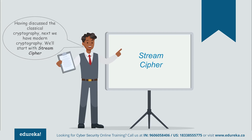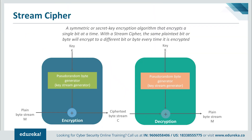Next on our list is stream cipher. A stream cipher is a method of encrypting text to produce cipher text in which a cryptographic key and algorithm are applied to each binary digit in a data stream one bit at a time. This method is not much used in modern cryptography. The main alternative method is block cipher, in which a key and algorithm are applied to a block of data rather than individual bits in a stream.